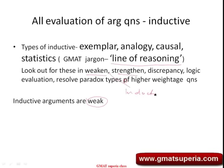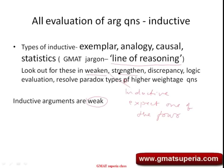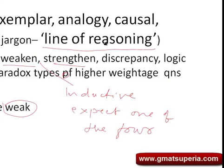Causal argument means citing a reason for an effect. In fact, the maximum number of arguments under the inductive category that you would get in the GMAT — weakens, strengthens, etc. — would be causal arguments. A causes B, meaning the speaker gives a certain explanation for an effect. By giving a counter explanation you can question it; by proving there is no other factor, you would support it. Statistical arguments are very common and very easy to identify — you would see numbers, percentages, ratios, especially survey reports and opinion polls, which are indicators of statistical arguments.